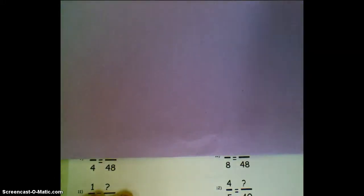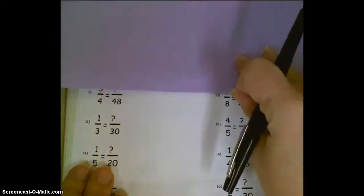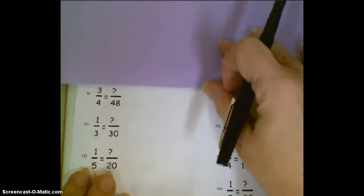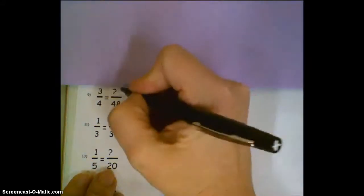48 divided by 8, or divided by 4 is 8, just thinking backwards. Or 4 times 8 is 48, so 3 times 8 is 24.